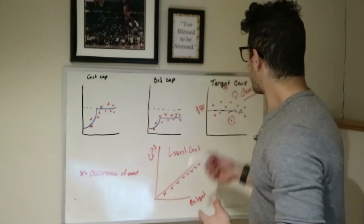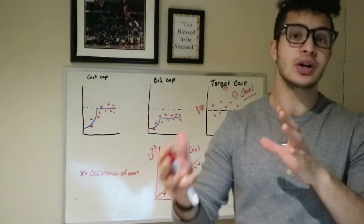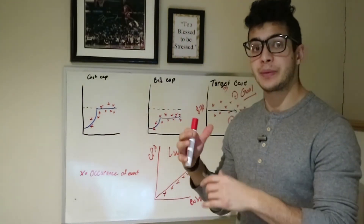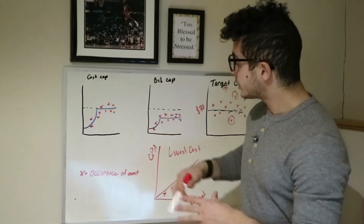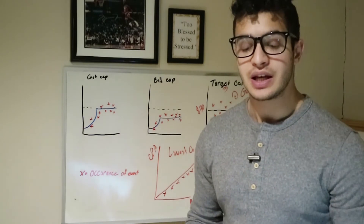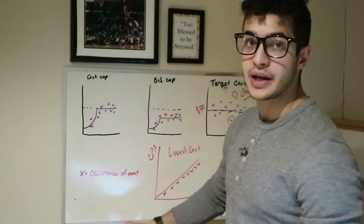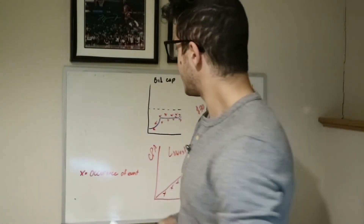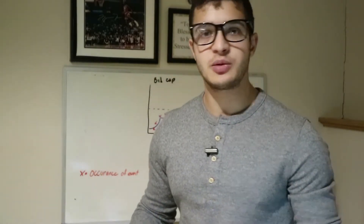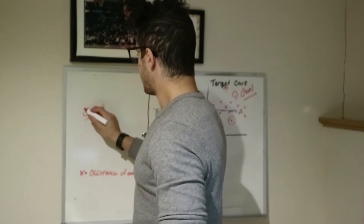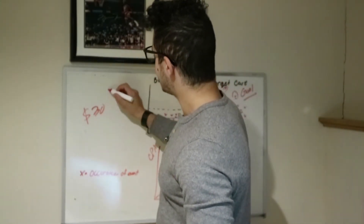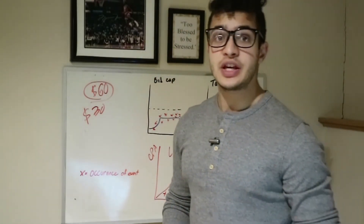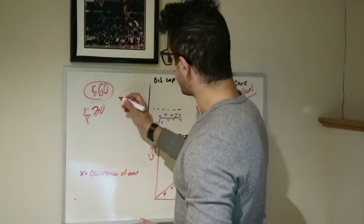That's pretty much it for cost cap, bid cap, target cost, and lowest cost. One quick secret: when you're running any of these campaigns and you want the budget to be thirty dollars, you're going to want to double that — so make the budget sixty dollars, or at least around fifty, especially when you're just starting out.